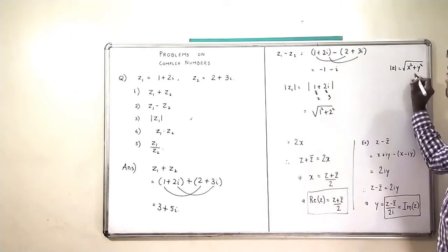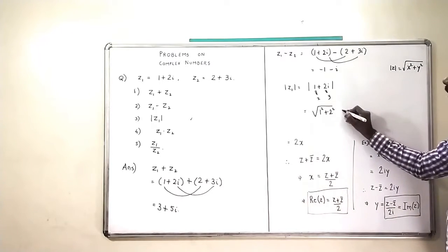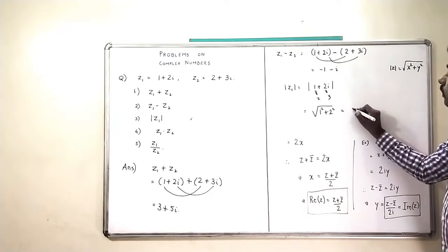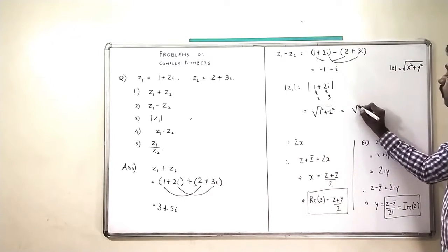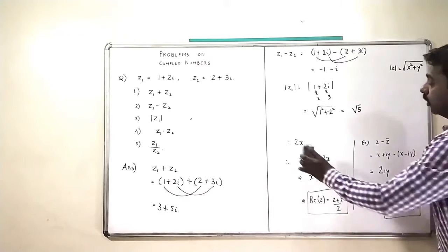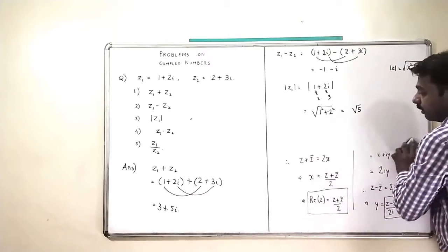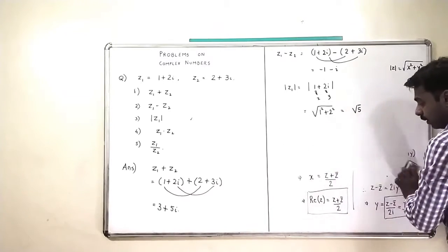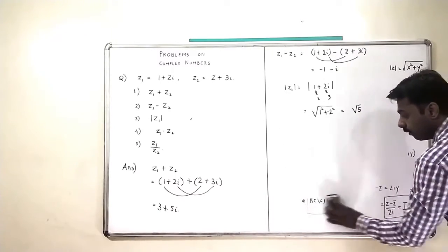No i squared, only Y squared, which is equal to square root of 5. So mod Z1 is square root of 5.